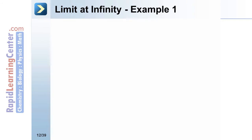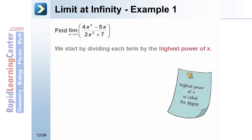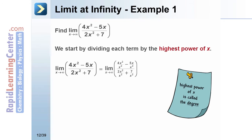Let's look at another example. Find the limit as x approaches infinity of (4x² − 5x)/(2x² + 7). We want to know if the y-values are approaching a distinct number L as x gets larger and larger. We start by dividing each term by the highest power of x — the degree. The largest power here is x², so each term gets divided by x².